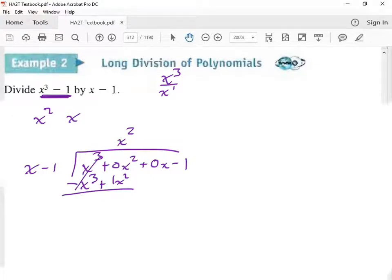These ones add to zeros so I can cross those out. And then for this one, I get 1x squared. I bring down a 0x. So I have plus 0x. And now I go x squared divided by x. And then I get a 1x.